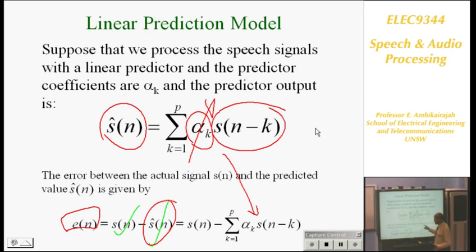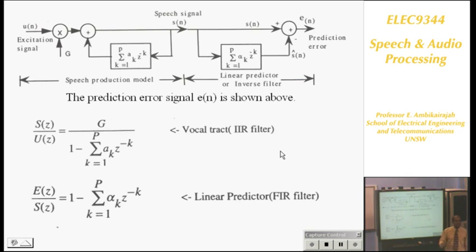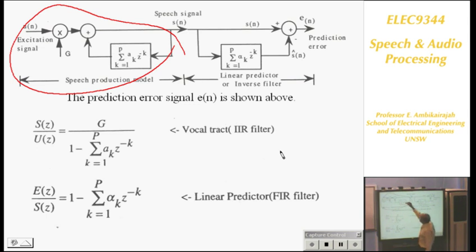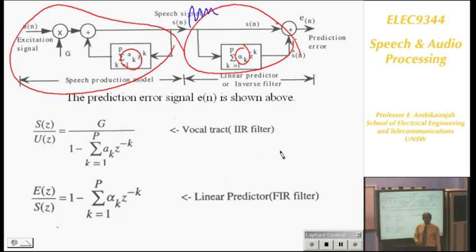I want to go back and talk about the inverse filter. This is your speech production model. This is the actual coefficient for that particular frame, which you don't know. All you have is the speech signal. You set up this particular prediction model, and if your prediction is correct, alpha_k will equal A_k. If your prediction is accurate, they will be equal.